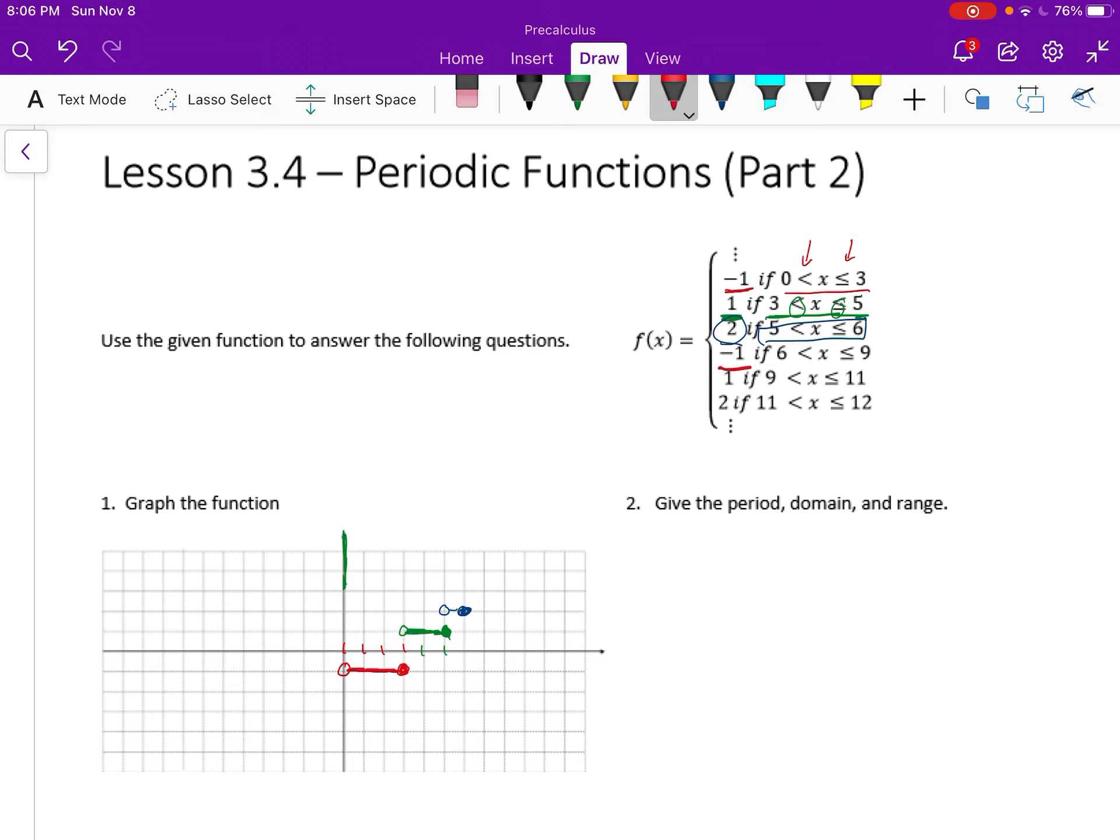And now we're actually back to negative one again. Going back to negative one doesn't guarantee that it's the beginning of another cycle, but it's a good indication. It does take up three units, just like it did up here, so that goes from six to nine. And then it's one from nine to 11, and it's at two from 11 to 12.